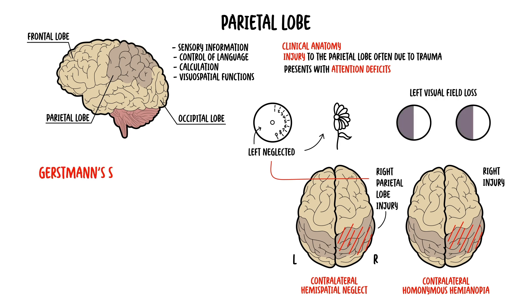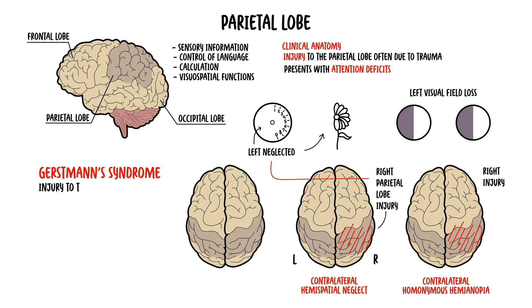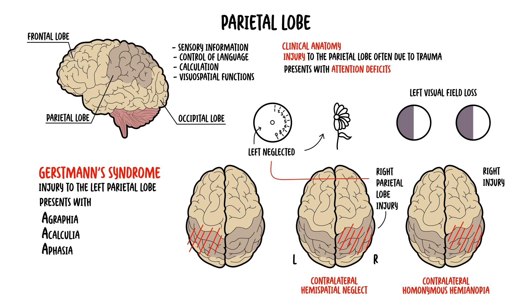Gerstmann syndrome can occur when there is also injury to the left parietal lobe in the dominant hemisphere. This presentation includes right-to-left confusion, agraphia (difficulty with writing), acalculia (difficulty with mathematics), aphasia (disorders of language), and agnosia (inability to perceive objects normally).